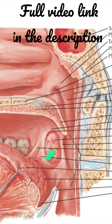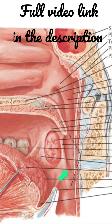Each tonsil lodges in a triangular tonsillar sinus. The tonsillar sinus is bounded in front by the palatoglossal arch — connecting the palate and the tongue — and containing the palatoglossal muscle. Behind, it is bounded by the palatopharyngeal arch, containing the palatopharyngeus muscle.